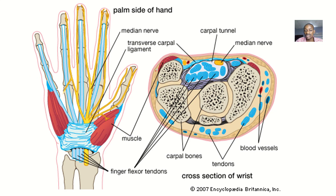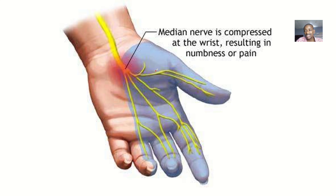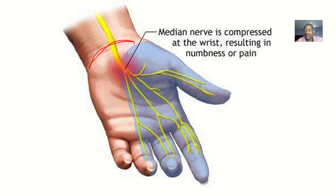Before I answer these questions, I'll use this picture to define what the carpal tunnel is. This place right here, where the median nerve has to pass, is a tunnel. This tunnel is formed on the carpal bones — that's why it's called the carpal tunnel.